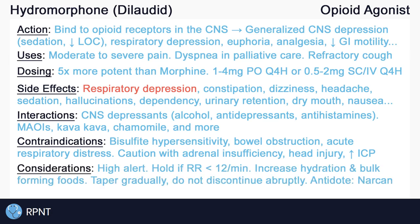Hydromorphone is considered a high risk or high alert medication. It is important to be aware of the policies and procedures regarding high alert medications in your area. Independent double checks are often required when preparing injectable hydromorphone to avoid errors. Hold hydromorphone and notify the provider if respiration rate is below baseline, usually less than 12 respirations per minute, due to the side effect of respiratory depression.